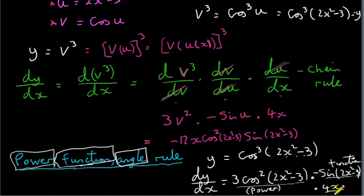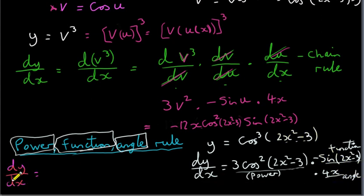And finally, the last part is the derivative of our angle or argument of the cos function, which is 2x squared minus 3. So this part is differentiating our angle. So I'm going to tidy up all of this and write it down over here.